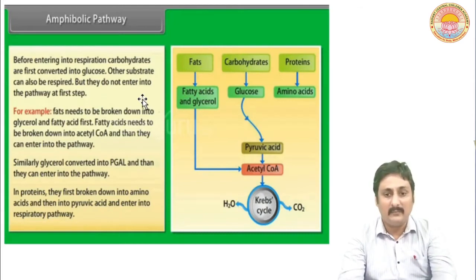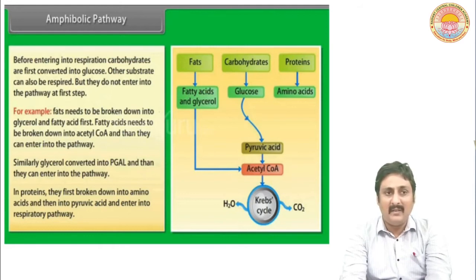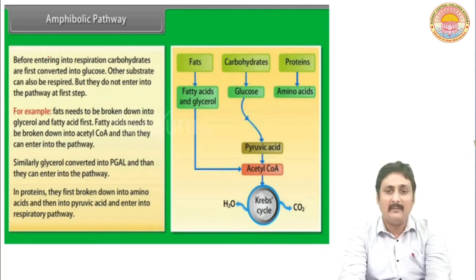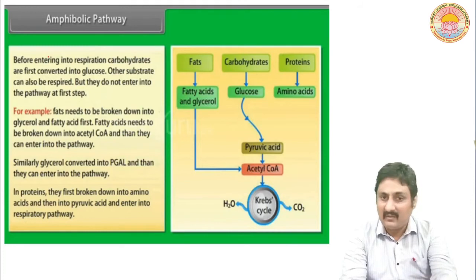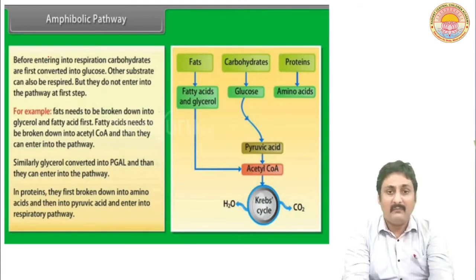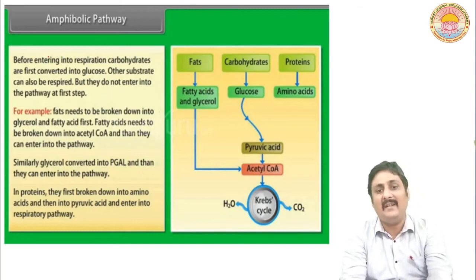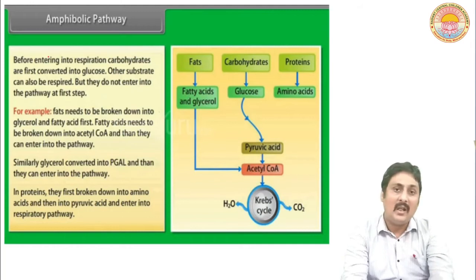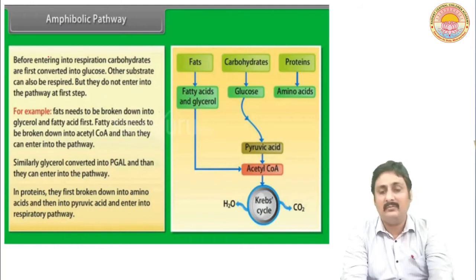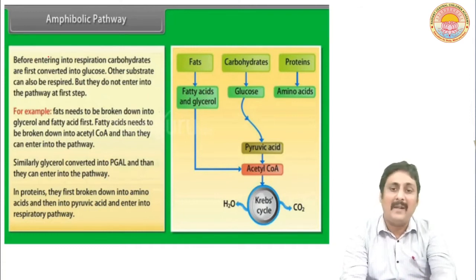Now if you look at this figure, there are three main components of food — apart from vitamins and minerals — that provide us energy: fat, carbohydrate, and protein. Fat when it breaks down during respiration changes into fatty acid and glycerol. Carbohydrate when it breaks down gives simple glucose. Protein breaks down into amino acids.